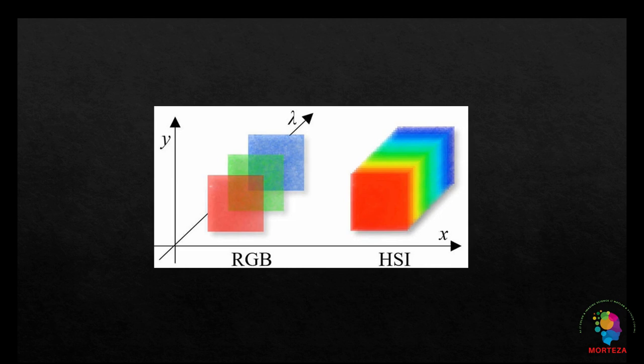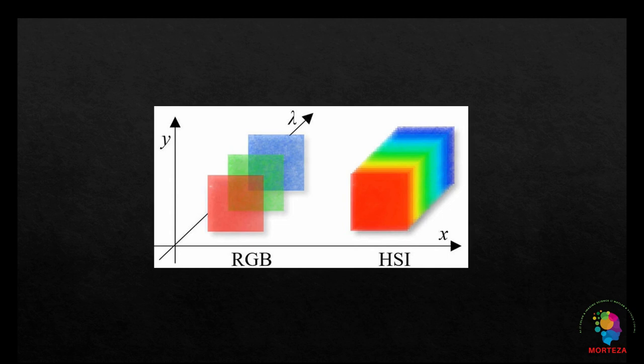It differs from traditional digital cameras in that it can capture hundreds or even thousands of narrow contiguous spectral bands, whereas digital cameras typically capture images in just three color channels red, green, and blue. Let's go over an overview of hyperspectral imaging and its benefits compared to a normal digital camera when it comes to object colorimetric visualization.